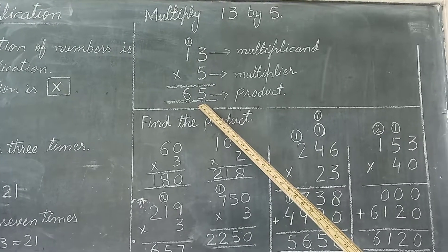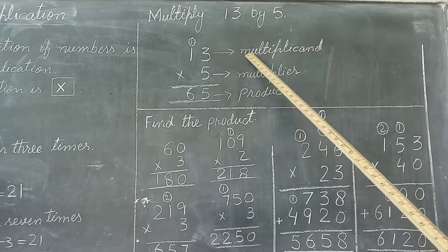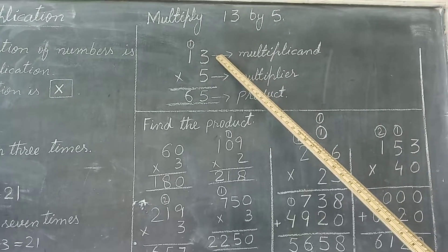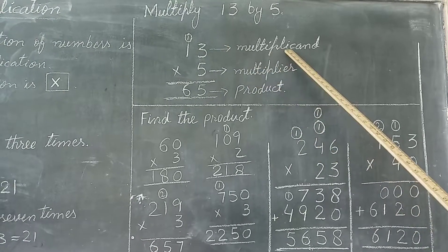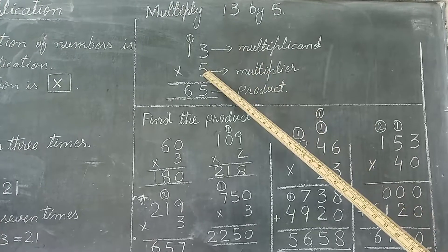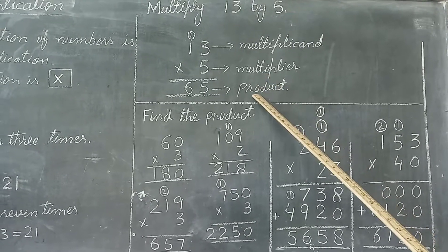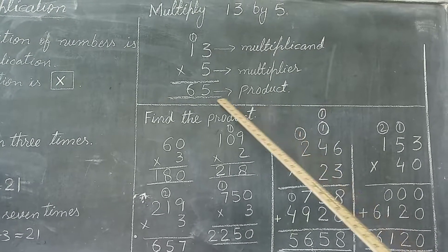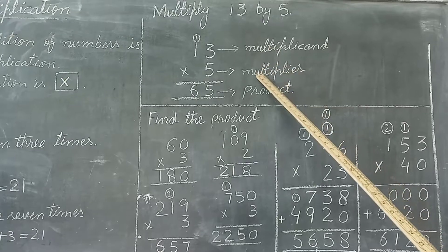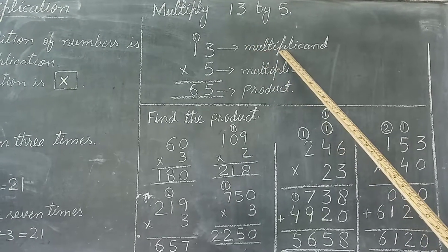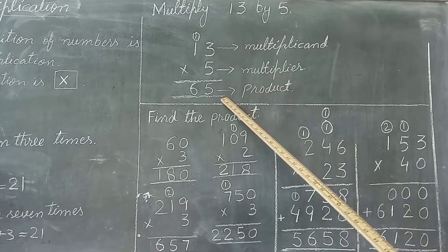One important thing to remember: the bigger number in the multiplication question is called the Multiplicand, which is written as the upper number. The smaller number which you are multiplying is called the Multiplier. And the answer you get is called the Product. So: Multiplicand, Multiplier, and the answer is Product.